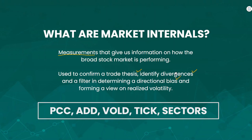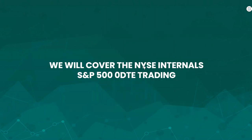Market internals can also be used to form a view on realized volatility. There are many market internals, but we will go over the few that we use in our zero-DTE trading system. This includes the put/call ratio, advance/decline line, volume difference, the tick index, and relative sector performance. We will cover the New York Stock Exchange internals, which encompasses all the S&P 500 stocks. We are not looking at one particular stock — rather we are looking at all the stocks that trade on the New York Stock Exchange.